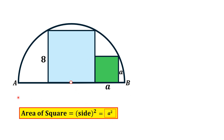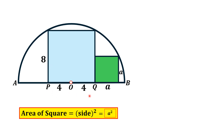Let's label the endpoints of the diameter of the semicircle as A and B, the center as O, and the two points where the larger square meets the diameter as P and Q. Since PO equals OQ and the side length of the square is 8, PO is 4 units and OQ is also 4 units.